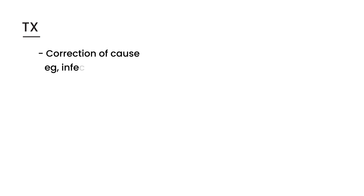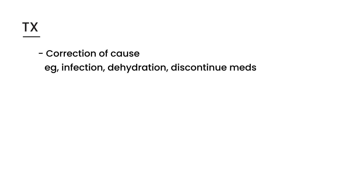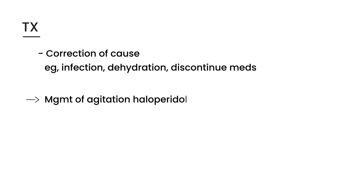How do you treat delirium? The first thing is to correct the cause. Was it an infection? Was the person dehydrated? Was the person being overdosed on certain medications? If so, discontinue those medications, hydrate the patient, and treat the infection. In the more acute state, you want to manage the patient's agitation. Agitation can be managed by giving an IM shot of haloperidol, which is an antipsychotic medication, and this helps lessen symptoms such as being combative or extremely agitated.